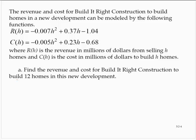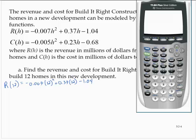The revenue to build 12 homes would be given by R of 12. R of 12 would be negative 0.007 times 12 squared plus 0.37 times 12 minus 1.04. Use a calculator for this. Plus 0.37 times 12 minus 1.04, and I get 2.392.